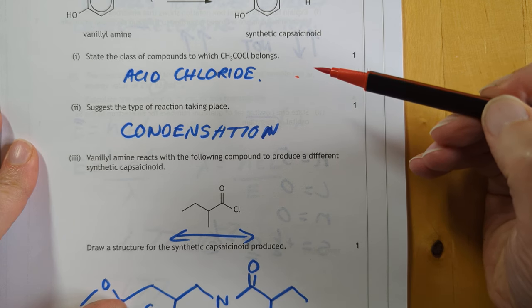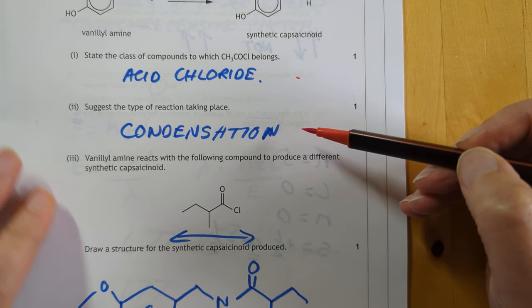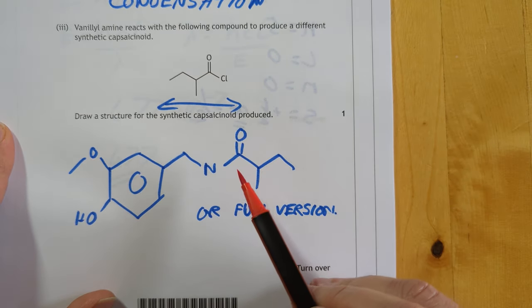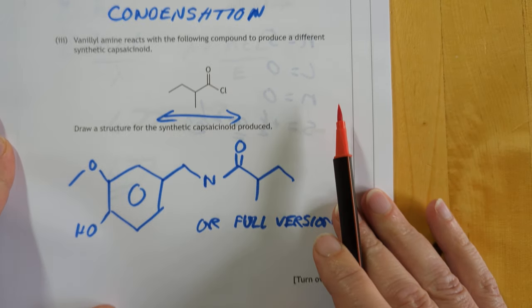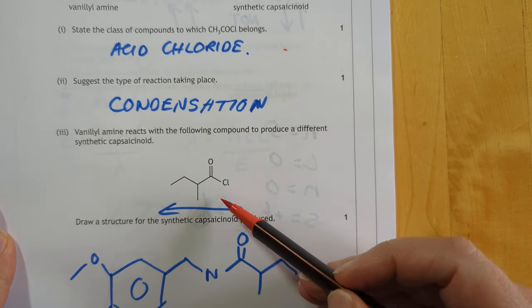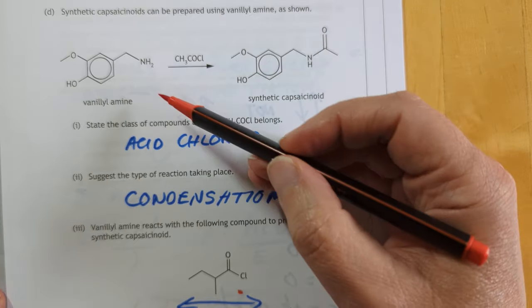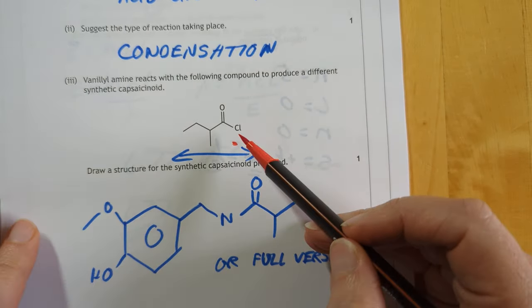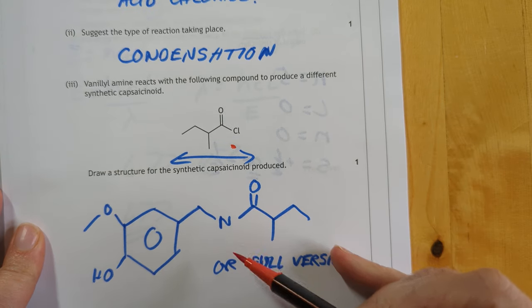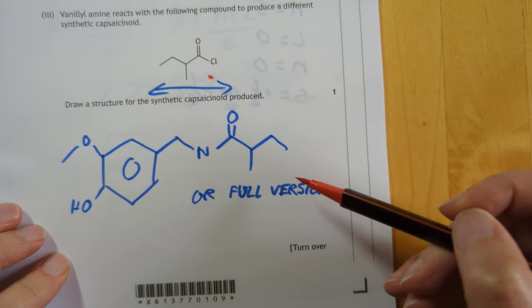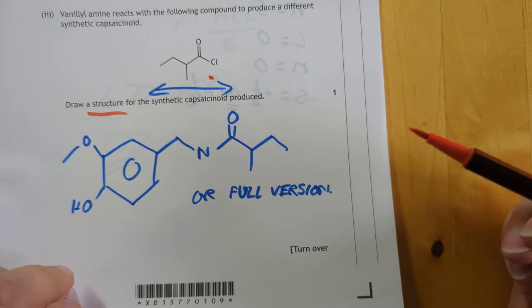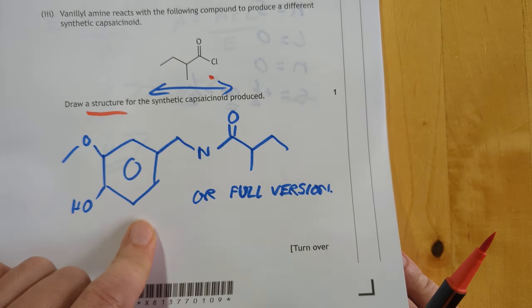This is an acid chloride. It's a condensation reaction I would say. Draw a structure for the synthetic capsaicinoid if you join this to this. So the first thing I did was flip this over so I can join the chlorine to the nitrogen atom, and I got that. It just says structure, so I'm assuming you can also have the full structural formula if you fancied, or the skeletal one, as I was being lazy here.